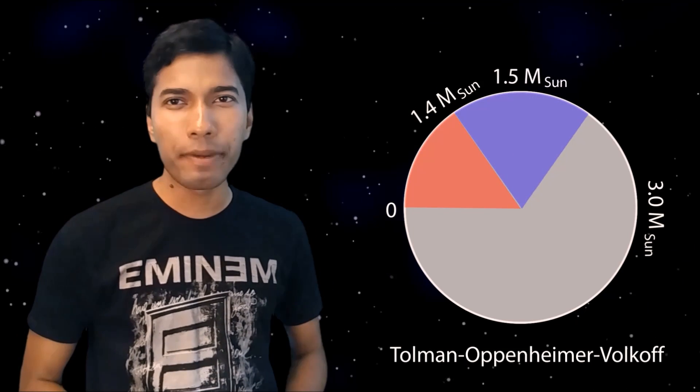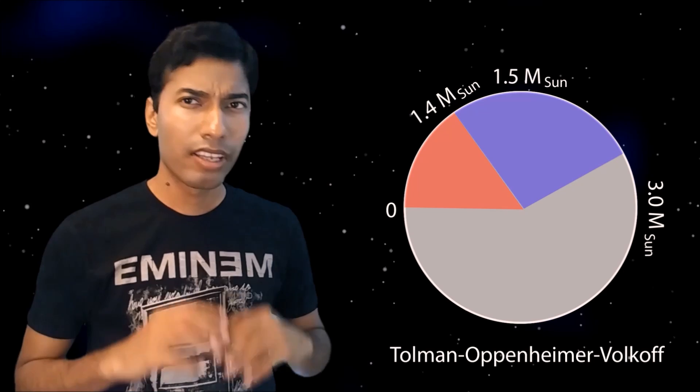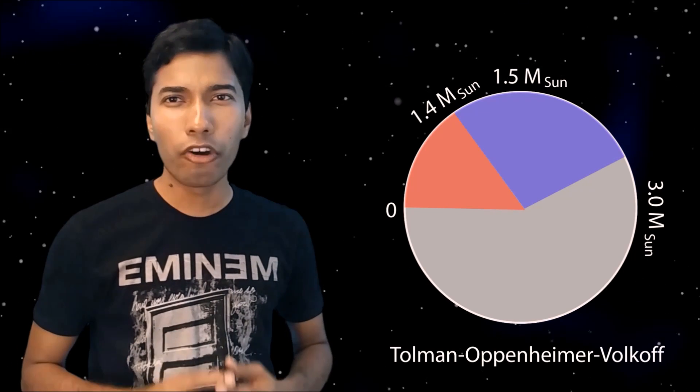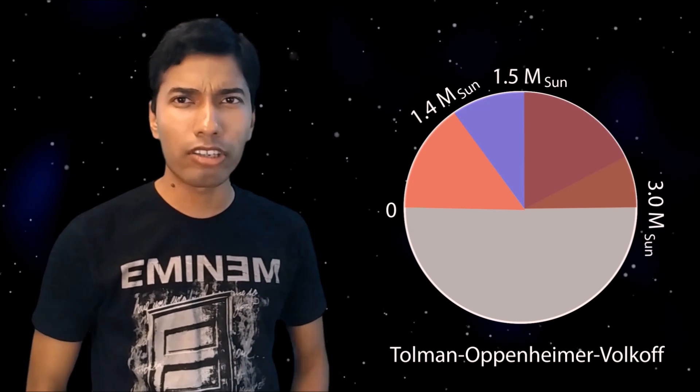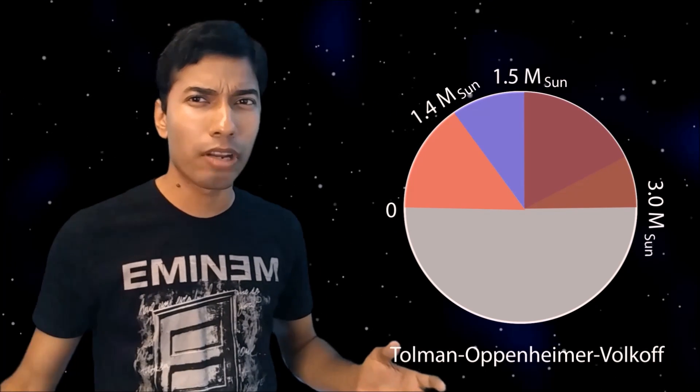If we increase the mass of a neutron star, then after a certain mass limit, the neutron star will collapse into a black hole. This limit is known as the Tolman-Oppenheimer-Volkoff limit. The exact value of this limit is still not known, but it is somewhere between 1.5 to 3 solar masses.